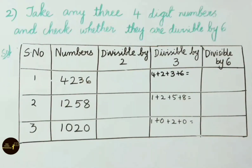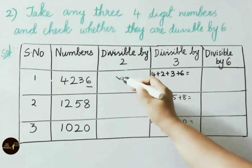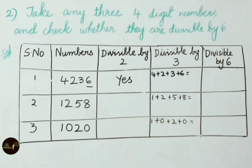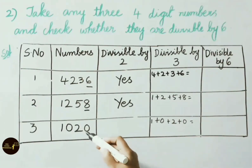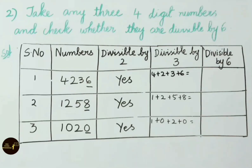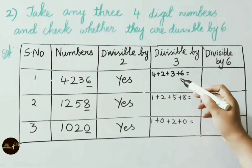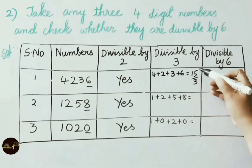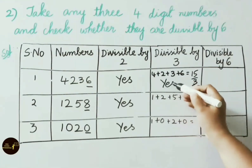Second question: Take any three 4-digit numbers and check whether they are divisible by 6. We have taken 4236, 1258 and 1020. Checking divisibility by 2: 4236 has 6 in ones place so it is divisible by 2; 1258 has 8 in ones place so it is divisible by 2; 1020 has 0 in ones place so it is divisible by 2. Now checking divisibility by 3 for 4236: sum of digits is 4+2+3+6=15; 15 divided by 3 is 5 with remainder 0, so 4236 is divisible by 3.